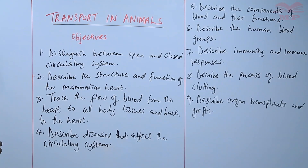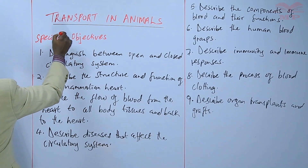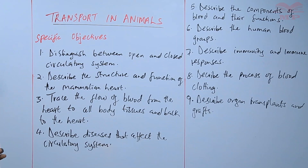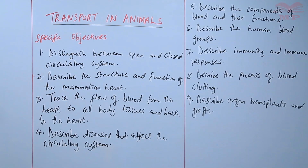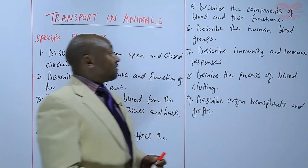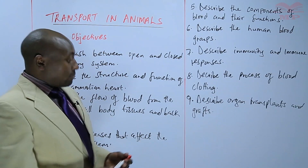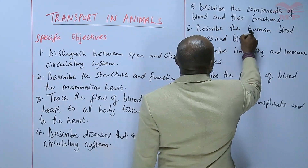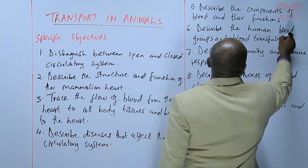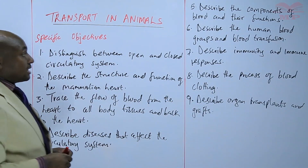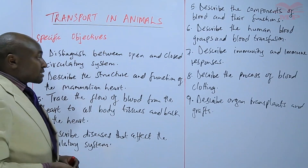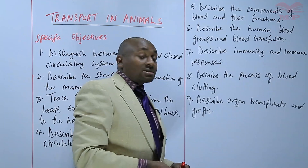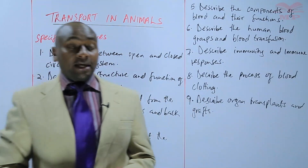Finally, we'll be able to discuss organ transplants and grafts. So those are nine objectives. Just to go through them again: the objectives of the subtopic transport in animals — distinguish between open and closed circulatory system; describe the structure and function of the mammalian heart; trace the flow of blood from the heart to all body tissues and back to the heart; describe diseases that affect the circulatory system; describe the components of blood and their functions; describe human blood groups and blood transfusion; describe immunity and immune responses; describe the process of blood clotting; and organ transplants and grafts.